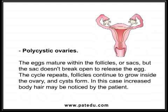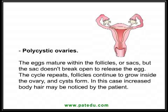With polycystic ovaries, the eggs mature within the follicles or sacs, but the sac doesn't break open to release the egg. The cycle repeats, follicles continue to grow inside the ovary, and cysts form. In this case, increased body hair may be noticed by the patient.